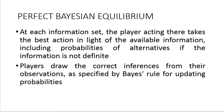In strategic games, perfect Bayesian equilibrium occurs when at each information set the player takes into account all available information, including probabilities of alternatives if information is not definite. Less formally, it means players draw the correct inferences from their observations as specified by Bayes' rule for updating probabilities. Even less formally, under perfect Bayesian equilibrium players are able to update their beliefs about the type of other players in light of new information — by observing actions undertaken by other players.